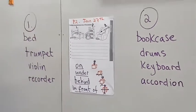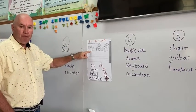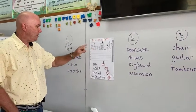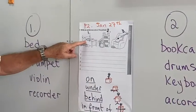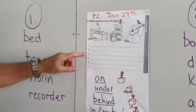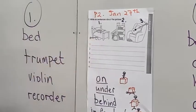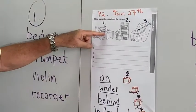Let's have a look. Picture number one here. What have we got? Well, we have a bed, we have a trumpet, we have a violin, and we have a recorder.